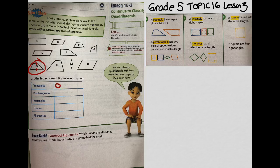A parallelogram. So a parallelogram has two pairs of opposite sides that are parallel and equal in length. Well, if I look at G, G has opposite sides that are parallel, those are equal in length. This is an opposite side that's parallel to this side and it's equal in length. So G can be a parallelogram.